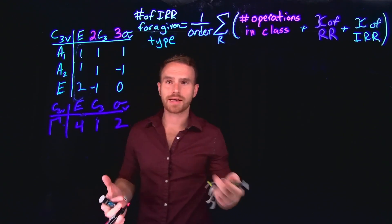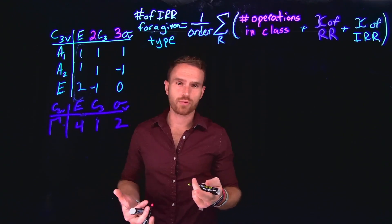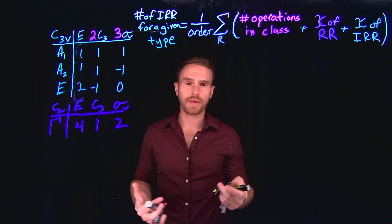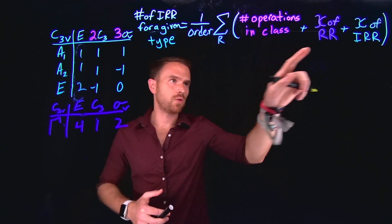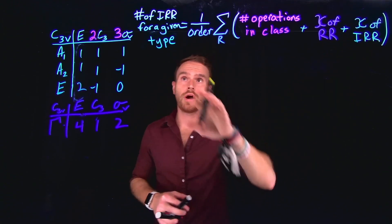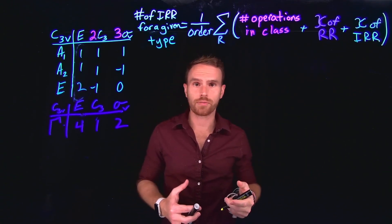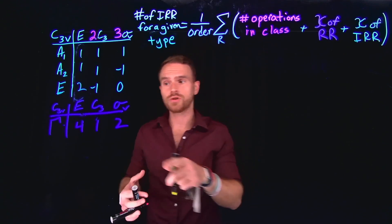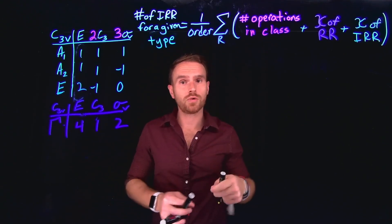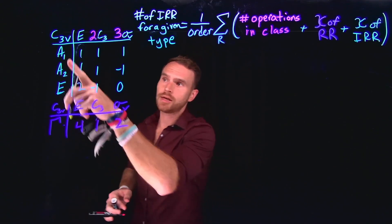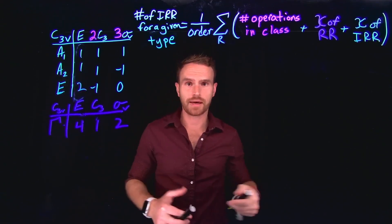In the case of our E class, there's an invisible 1. For our C3 class, there's a 2. And for our sigma V, there's a 3. This tells you all the different components of what's called our reduction formula. Our reduction formula is what we use to reduce this reducible representation to its individual components, which are made up of the irreducible representations from the character table.